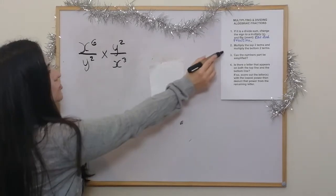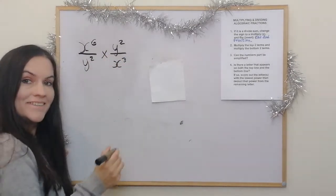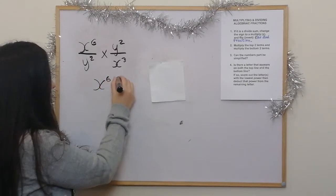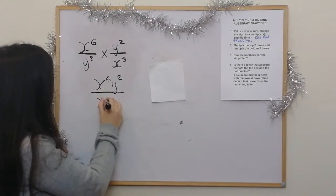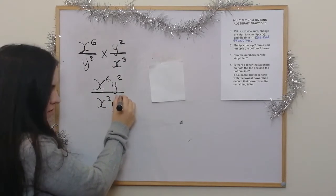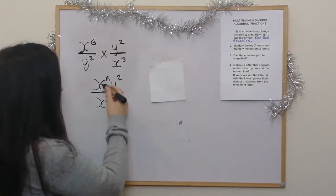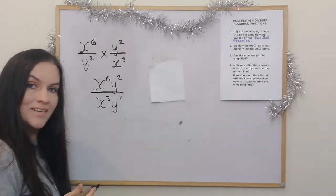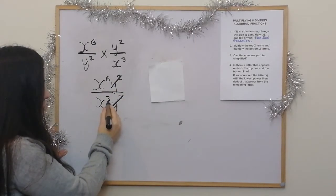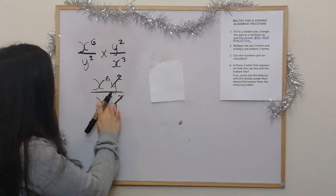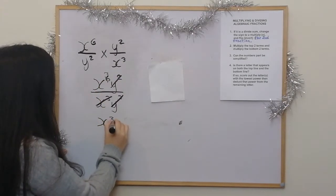This example is a multiply, so we go straight to step 2. Multiply the top two terms: x to the power of 6 times y squared, written as x to the power of 6, y squared. Then multiply the bottom two terms, writing in order: x cubed, y squared. Y squared and y squared are the same so they cancel. For the x terms, we score out x cubed (the lowest power) and subtract 3 from 6, giving x cubed. The final answer is just x cubed.